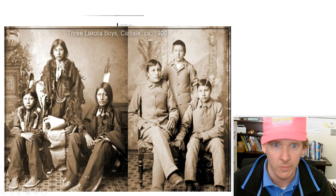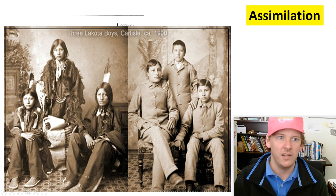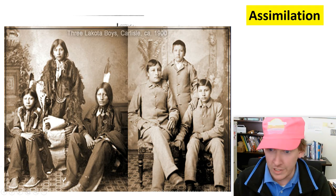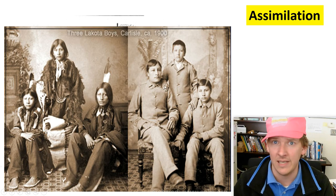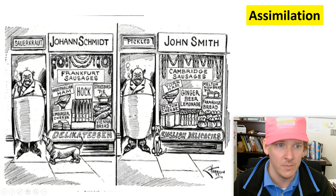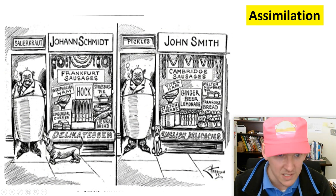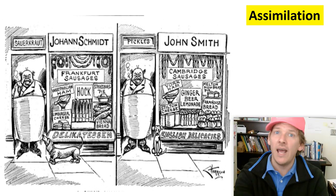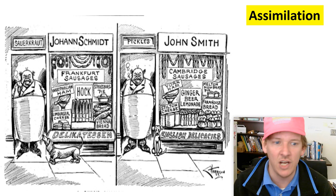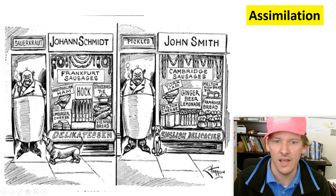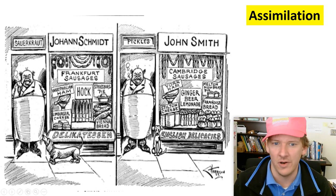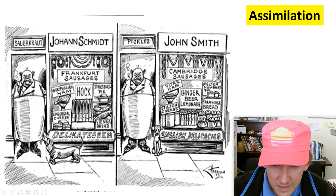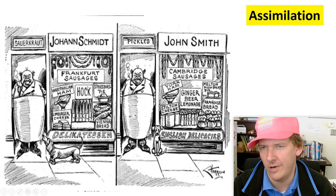Assimilation — you might remember this from an earlier video where we discussed forcing American Indians to assimilate and westernize. The same thing happened to the Germans. You can see Germans changing their names, changing the names of things. All of this was an example of: you've got to become like us. You want to come fit in, be a part of this country? Then you're going to have to change what you are.